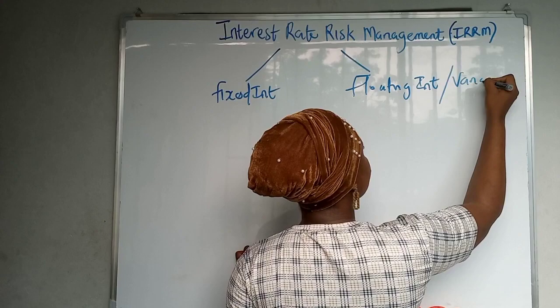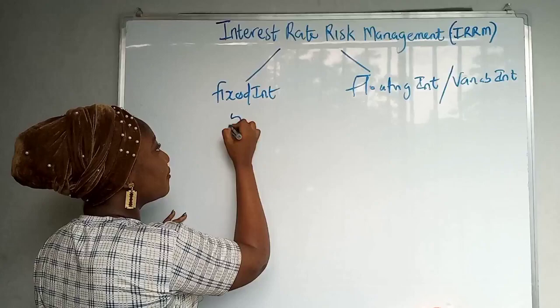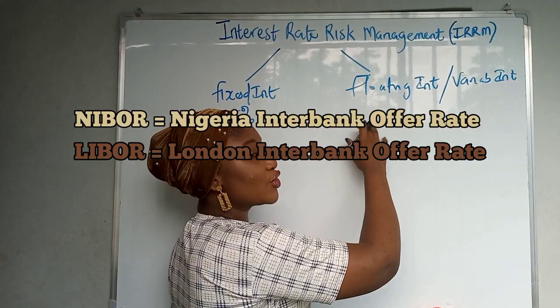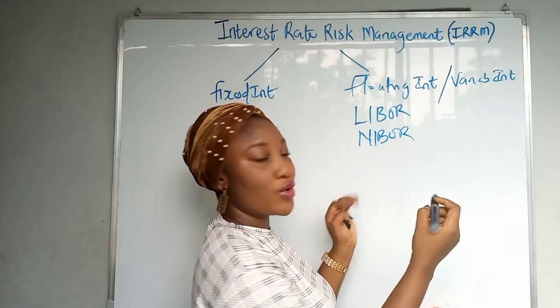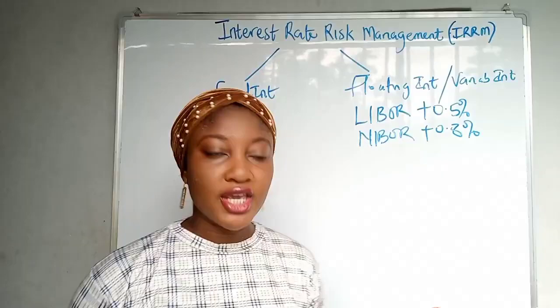That is the risk profile — floating interest or variable interest. When a company takes a loan with fixed interest, it means interest rates have a possibility of going up, so it's fair to just take a loan with a fixed interest rate like five percent. When they take floating, it's always based on the LIBOR rate or the NIBOR rate — the London Interbank rate — so LIBOR or NIBOR gives you a base rate, like plus 0.5 percent or plus 0.8 percent.